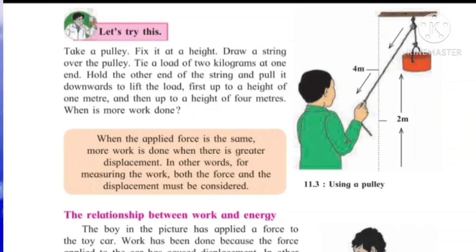Now everyone see in your textbook page number 77 — here one picture is shown of using a pulley. As you observe in a village, there are wells for taking water. To remove water from the well, they have a pulley-like structure with a thread. At one end they tie the bucket, and with the help of that pulley we can remove water from the well. Here, in place of a bucket, they are attaching a weight. When the applied force is the same, more work is done when there is greater displacement — as the distance is more, work done is also more.